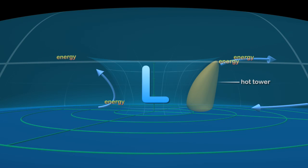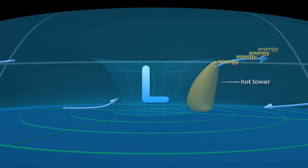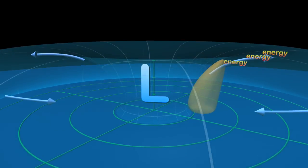Hot towers act like express elevators, accelerating the movement of energy into high-altitude clouds. This energy boost tends to strengthen the hurricane.